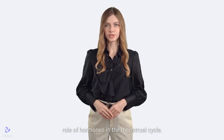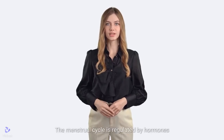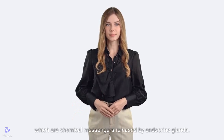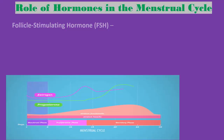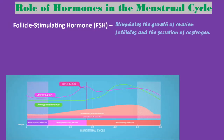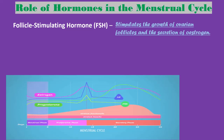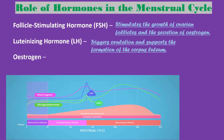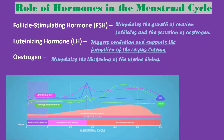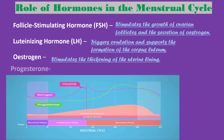Role of hormones in the menstrual cycle. The menstrual cycle is regulated by hormones, which are chemical messengers released by endocrine glands. The key hormones involved include: follicle-stimulating hormone (FSH), which stimulates the growth of ovarian follicles and the secretion of estrogen; luteinizing hormone (LH), which triggers ovulation and supports the formation of the corpus luteum; estrogen, which stimulates the thickening of the uterine lining; and progesterone, which maintains the endometrium for implantation.